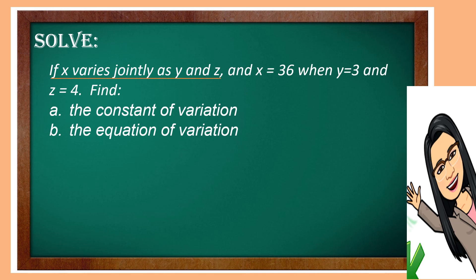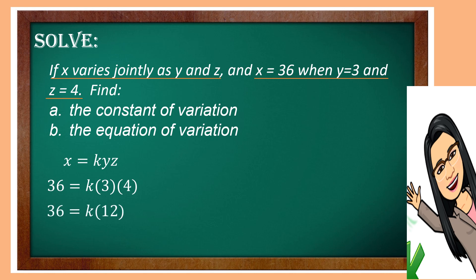Using the statement 'X varies jointly as Y and Z,' changing this into symbols we get X equals K times Y times Z. Then, if X equals 36 when Y equals 3 and Z equals 4, we can find the constant of variation by substituting these values. So, 36 is equal to K times 3 times 4. Multiply 3 and 4, which is 12.